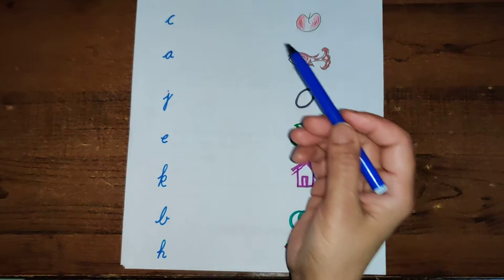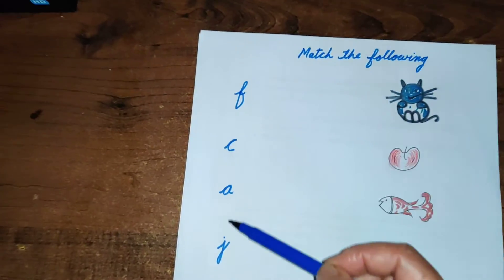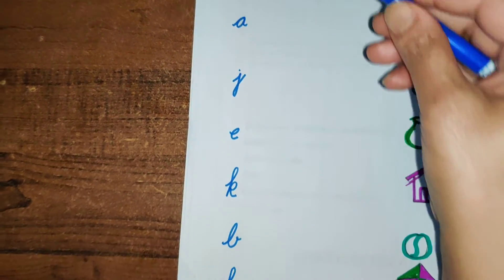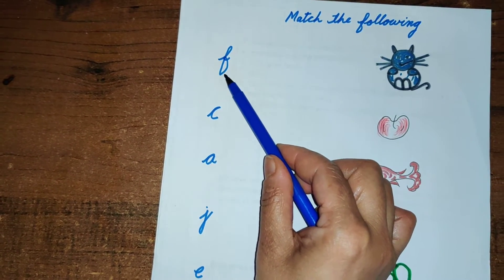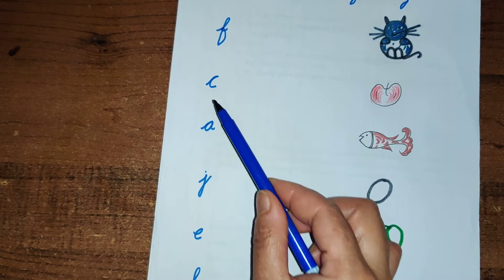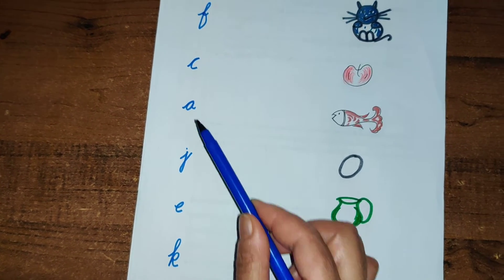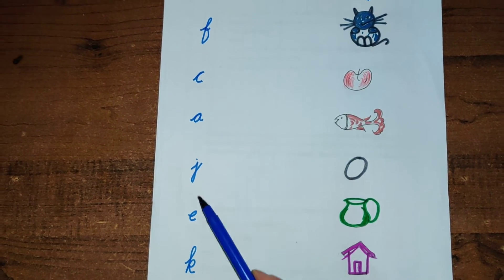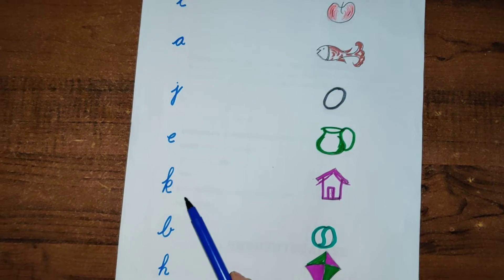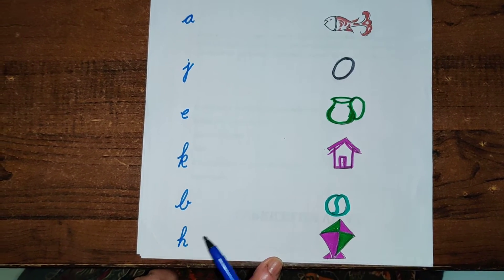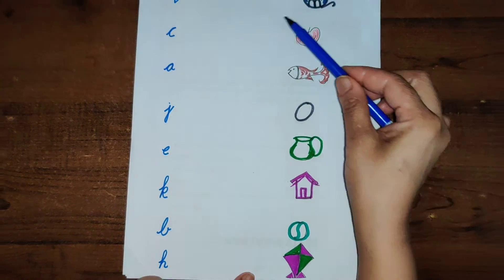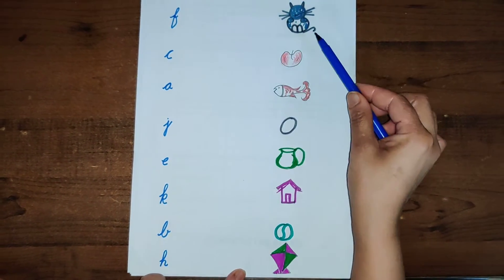And now come this side, these are the alphabets written. Now read with me: it's F, C, A, J, E, K, B, H. Now what we have to do, we have to match these letter alphabets with the pictures.